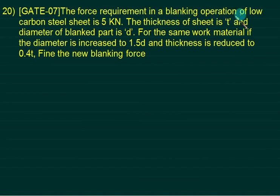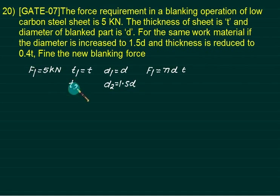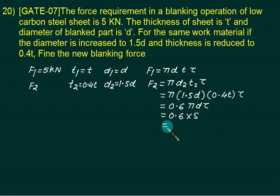Example: F1 = π kN for blanking a circular blank of diameter D and thickness T. If diameter is increased to 1.5D and thickness reduced to 0.4T, find F2. F2 = π×1.5D×0.4T×τ = 0.6×(π·D·T·τ) = 0.6×F1 = 0.6π kN = 3 kN.